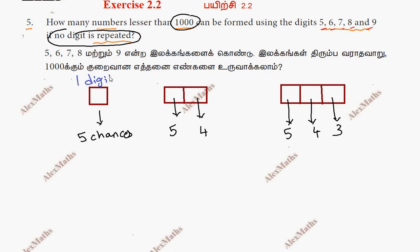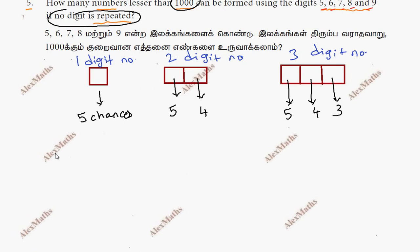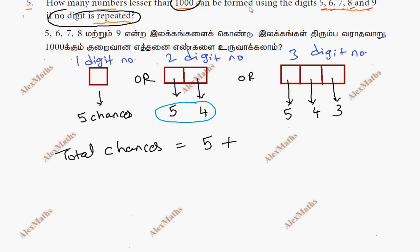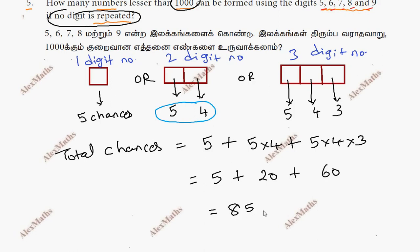So total chances: 1-digit numbers = 5, plus 2-digit numbers = 5 × 4 = 20, plus 3-digit numbers = 5 × 4 × 3 = 60. Total = 5 + 20 + 60 = 85. So 85 numbers are possible which are less than 1000.